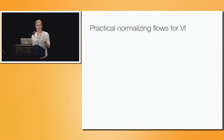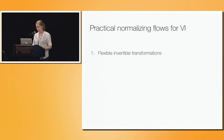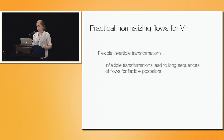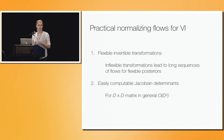To make this practical, we have two requirements for the invertible transformations. First, they should be flexible enough that we don't require very long sequences, since transformations must be applied sequentially. Inflexible transformations lead to long sequences if you want a flexible final posterior. Second, the Jacobian determinant must be efficiently computable. In general, for a D-by-D matrix the complexity scales as D cubed, so we'd like to reduce that for our invertible transformations.